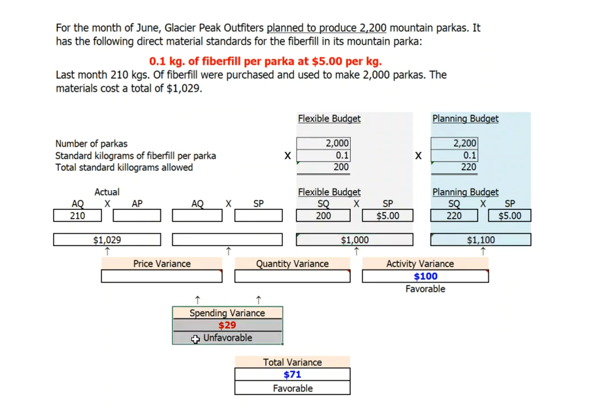Let's go ahead now and break down our spending variance into its two components, which is the price variance and the quantity variance. We'll begin by calculating the actual price we pay for fiberfill. We can take the total cost of $1,029, divide it by the actual quantity to get an actual price. Let's go ahead then and calculate our actual quantity of 210 kilograms. What would we have expected to pay had we paid our $5 per kilogram standard price? We would have expected to pay $1,050.